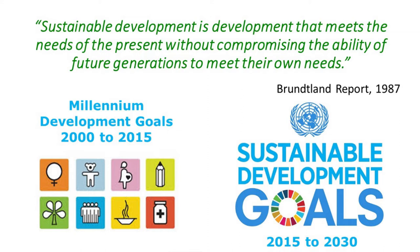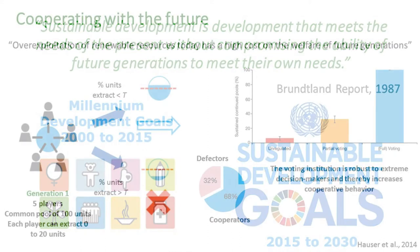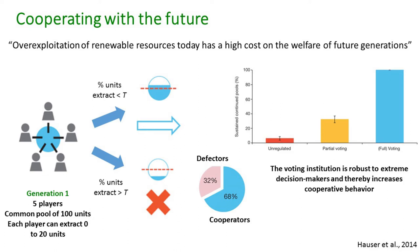I want to make a little excursion into game theory and the statement that over-exploitation of renewable resources has a high cost on the welfare of future generations. An experiment was conducted using game theory where you have five players and a common pool of 100 resource units. Each player can extract anything from five to 20 units, with the assumption that anything not taken is left for the future. Game theory usually distributes resources within a generation.